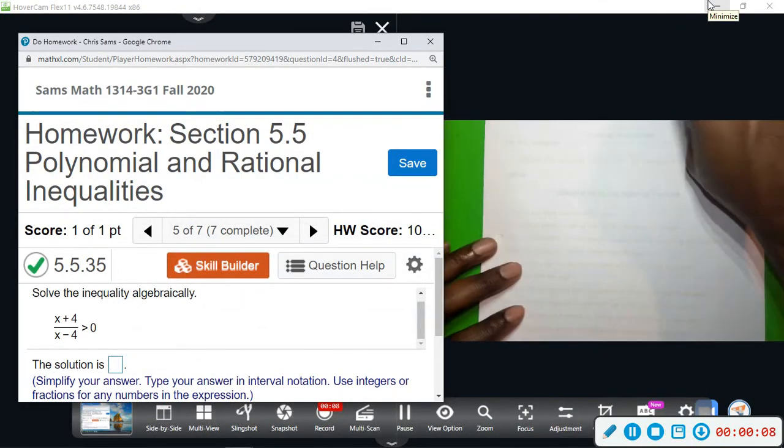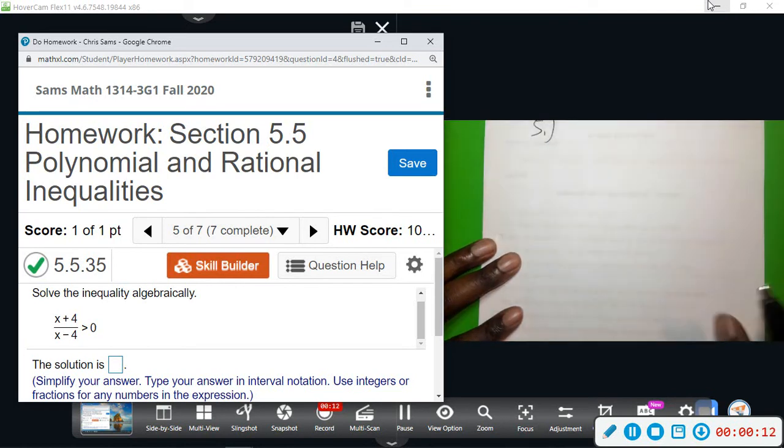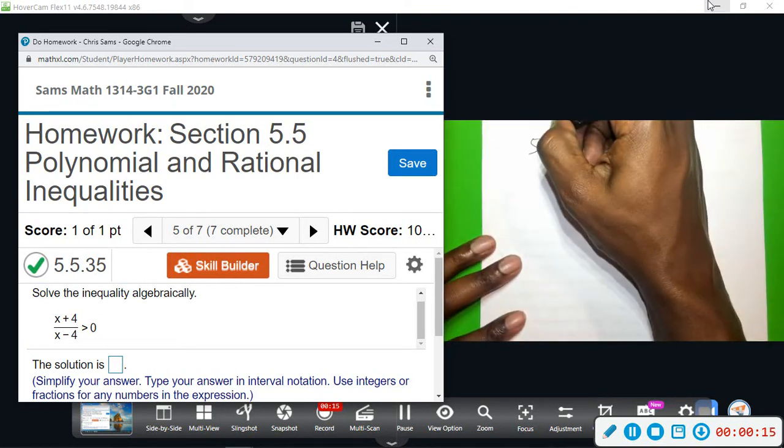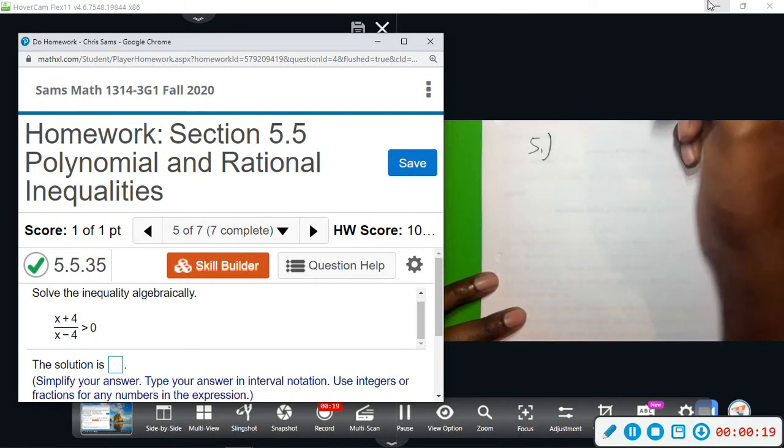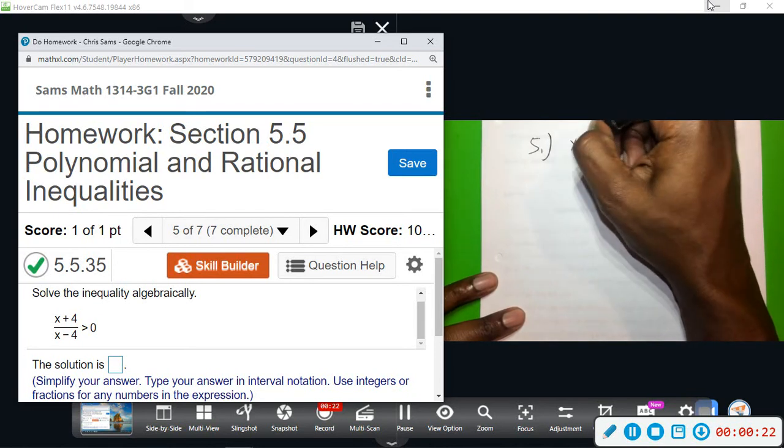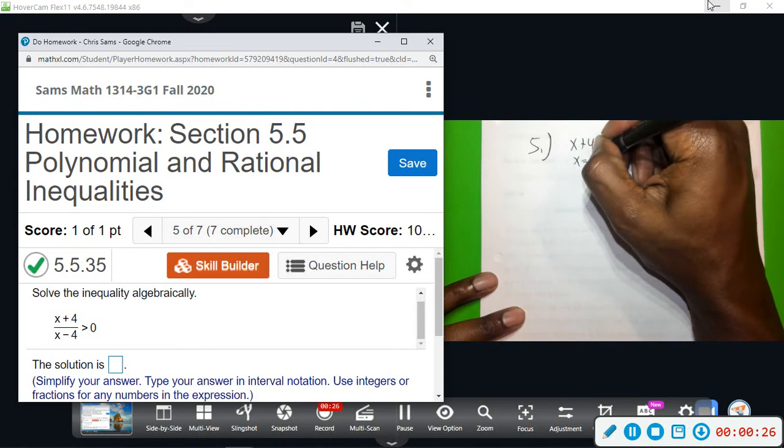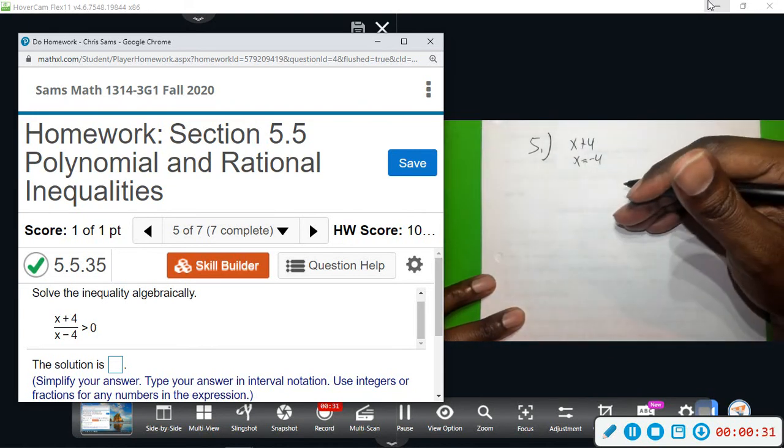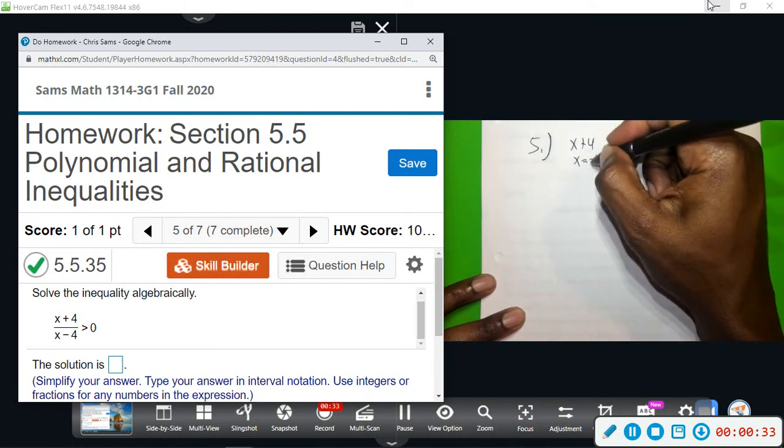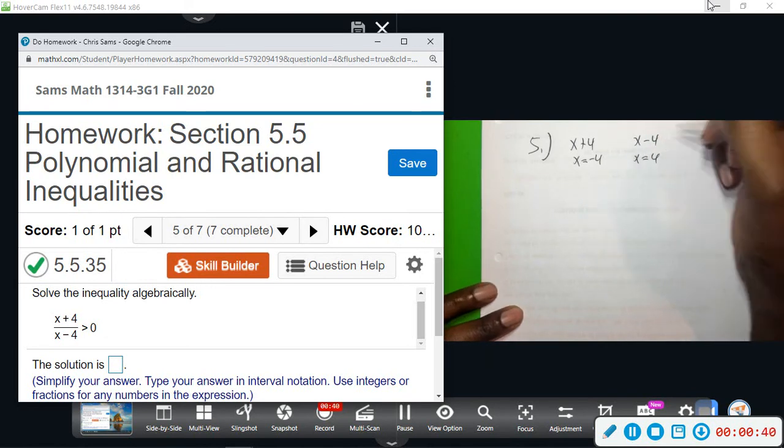Alright, number five. We're going to get two critical values, whatever makes this function equal zero from the top and the bottom. With the top, x plus four, x equals negative four will make the top zero, and zero divided by any number is going to be zero. So that's one critical value. In the bottom, x minus four gives us x equals four. So we get these two critical values here.